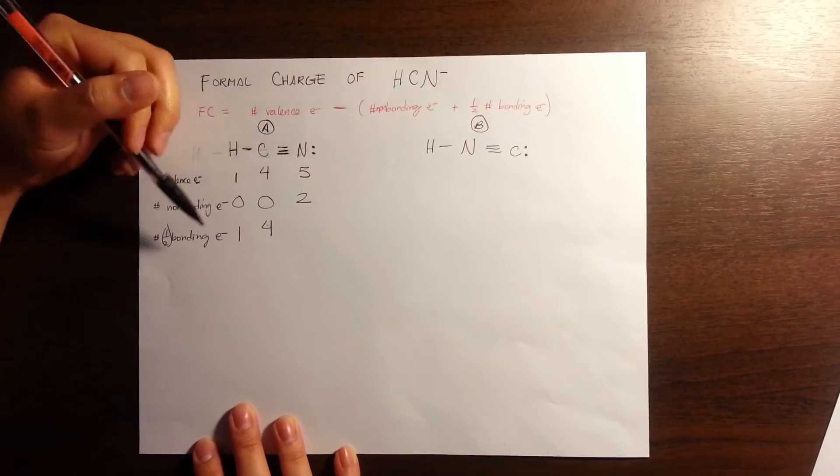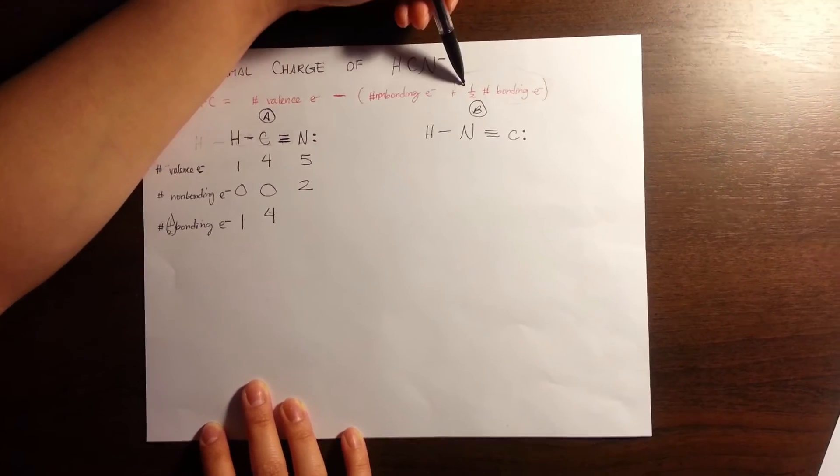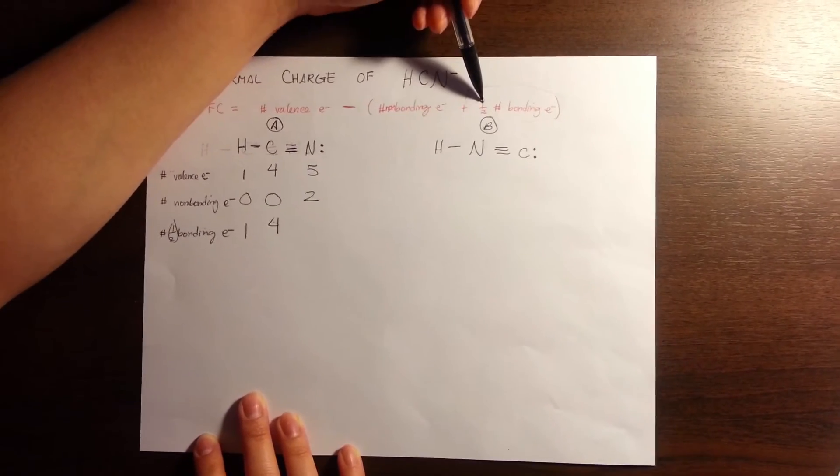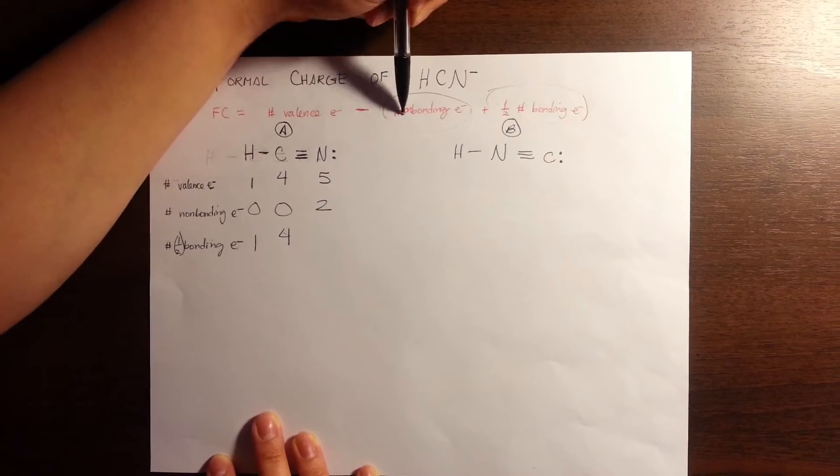When you're looking for this value, all you have to do is count the number of lines in your Lewis structure. When you're looking for the number of non-bonding electrons, you count the dots on your Lewis structure.